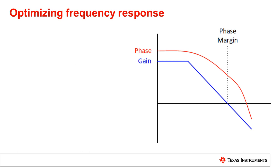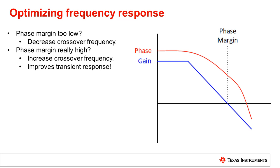After using those equations sometimes phase margin may be too low in which case it becomes necessary to decrease the crossover frequency. If phase margin is high it may hide the fact that converter could be much faster in transient response by increasing the crossover frequency.